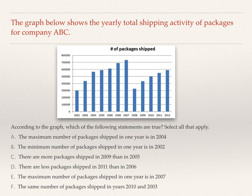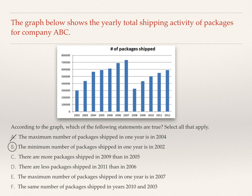Now I'm ready to look at the answer choices. Is A true — the maximum number of packages shipped is in 2004? That is not true; the maximum was in 2007. Choice B — the minimum number of packages shipped in one year is 2002. We established that is true, so we can circle it. Looking at D — there are fewer packages shipped in 2011 than in 2006. That is also a true statement.